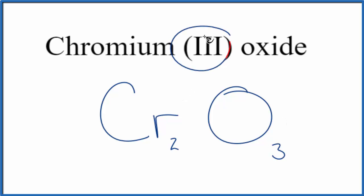We said chromium, that was three plus, and the oxygen, that was two minus. Two times three plus, that's six plus. Three times two minus, six minus. These two numbers, they add up to zero, we have a net charge of zero. So this is the formula for chromium three oxide.